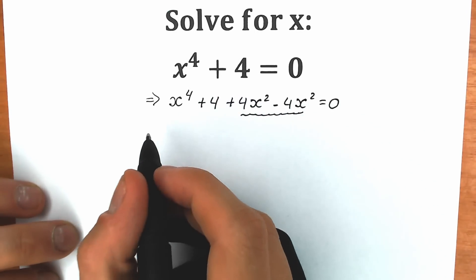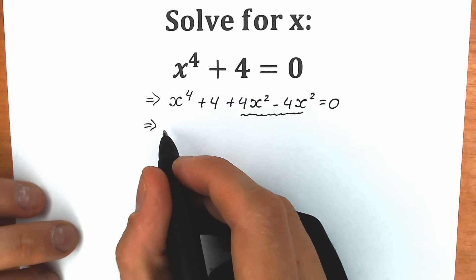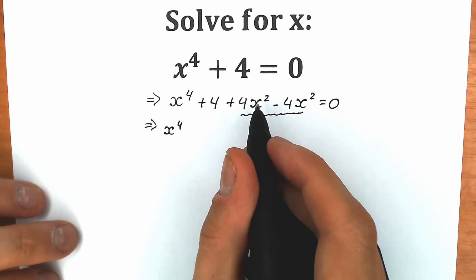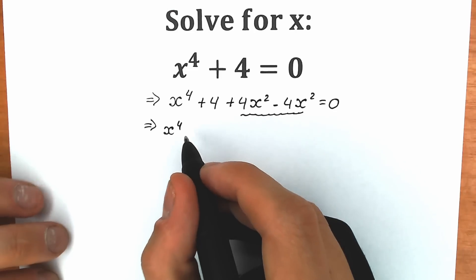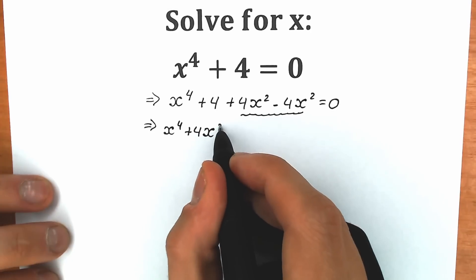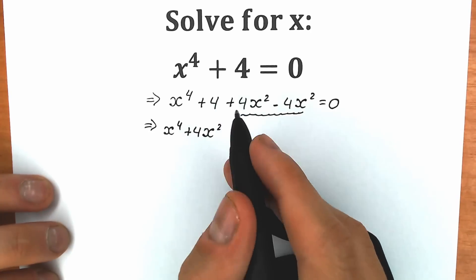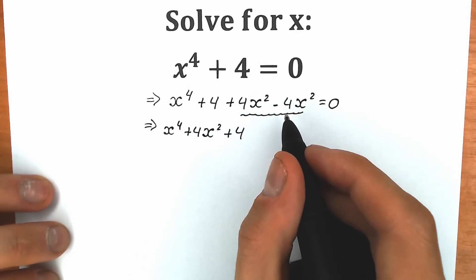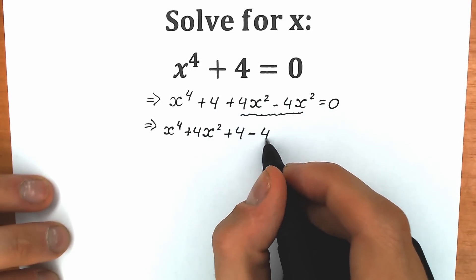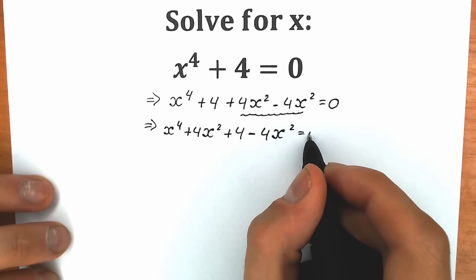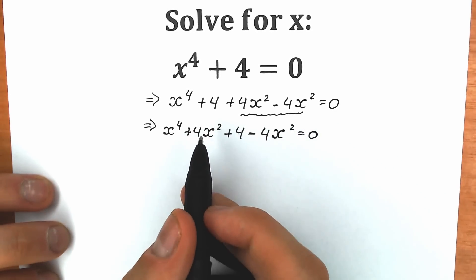Let's group the 4x² with the main expression and leave the minus 4x² at the end. So as a result we have: x to the fourth power, plus 4x², plus 4, and then minus 4x² equal to 0. Now we have all terms with addition grouped together.